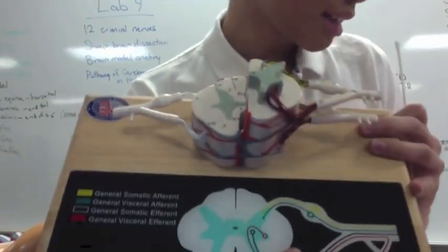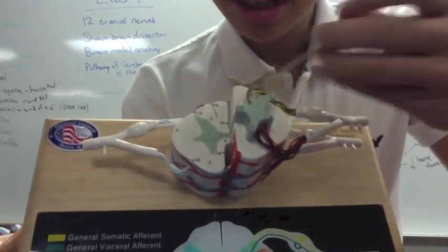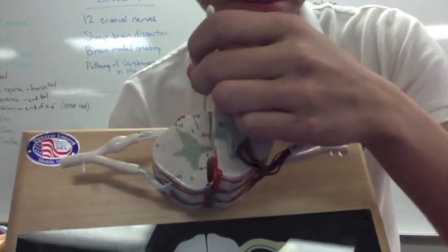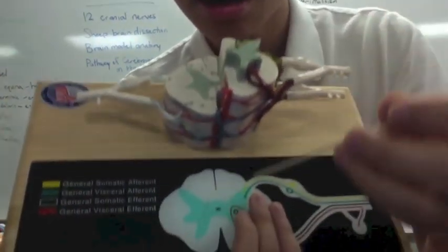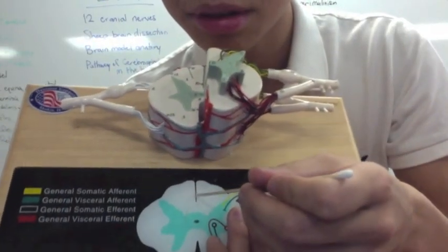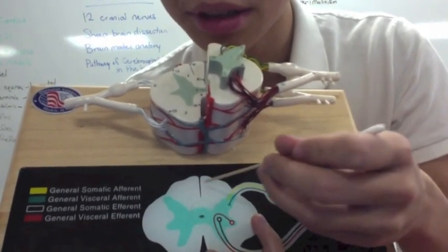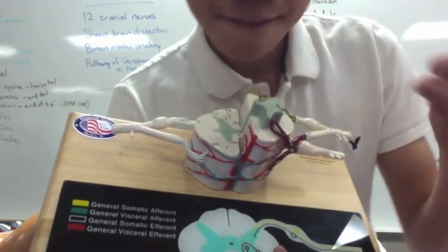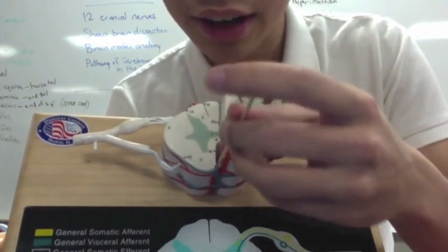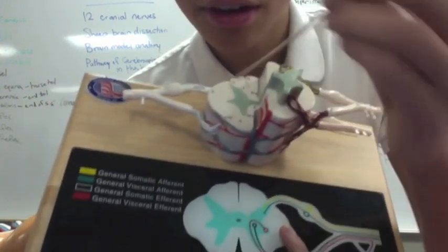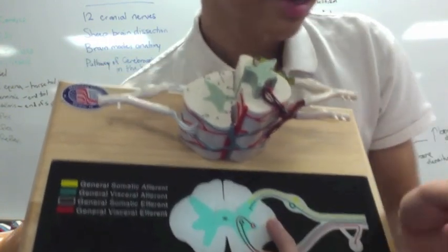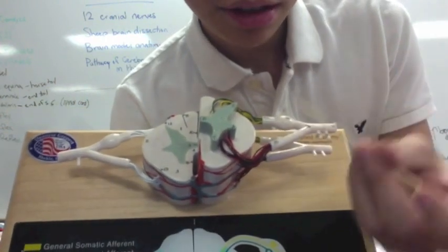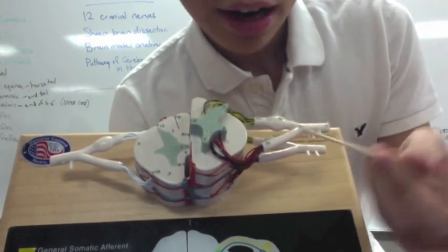Next is the posterior median sulcus — this section right here. It's the smaller groove. Next is your anterior median fissure, which is this section right here — it's the bigger one.